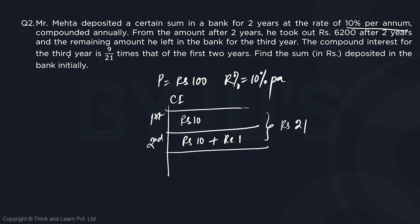Now, it is given that the compound interest for the third year is 9/21 times of the first two years. So the first two years we get rupees 21. So we are supposed to get rupees 9 now because it's 9/21 times of the first two years.